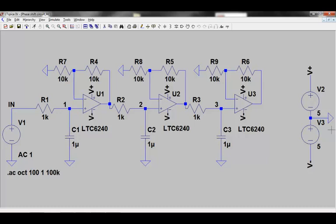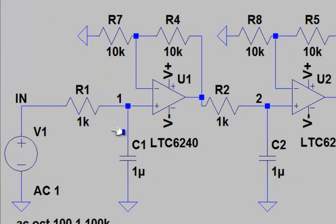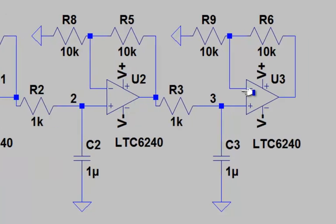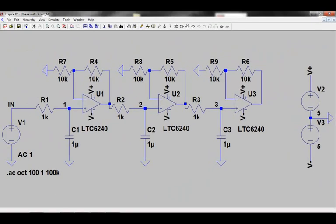To investigate Nyquist plots, I've constructed a slightly more complicated circuit. Here we have a single pole RC low pass filter, buffered by an op amp with a certain amount of gain. I've then repeated this circuit three times, so that we can show the effects of a single pole, two pole, and three pole RC filter.